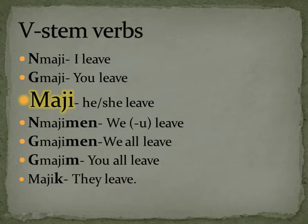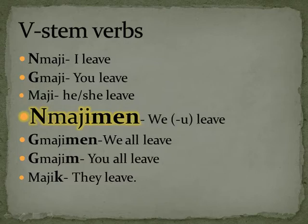Some people will also put a 'wek' there, especially older speakers, so instead of just maji it will be maji-wek. Some speakers will also put a W on the front, so like wmaji. Namajimen — we but not you leave. This would be like saying 'hey, we're leaving' and you're not included. So the person already knows from the verb whether they're included or not.